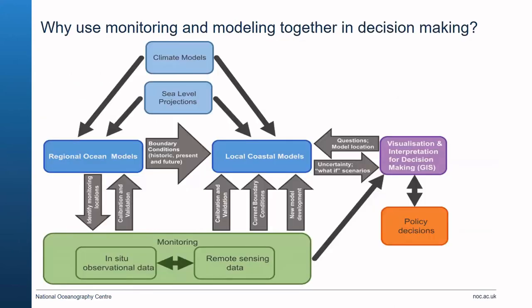Why do models and observations go together in decision making? You can use models to predict and visualise what might happen. You need observations to validate and calibrate that model, and sometimes as the forcing condition to drive it. Once the model is running and you're confident in the results, you can use model results to visualise what-if scenarios, then interpret and interrogate these results to inform policy and decision making.